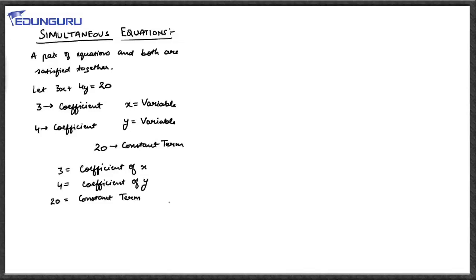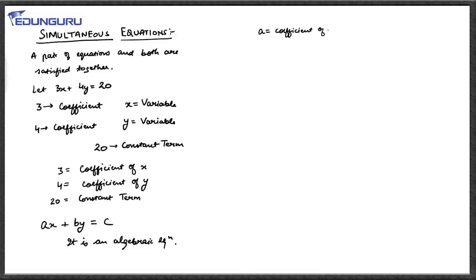This is an equation with numerical coefficients. The same equation could also have algebraic coefficients — for example: ax plus by is equal to c. Nothing different; it is just that the coefficients have become algebraic instead of numeric. x and y still remain the variables, a is the coefficient of x, b is the coefficient of y, and c is the constant term. These are the various terminologies associated with an equation.